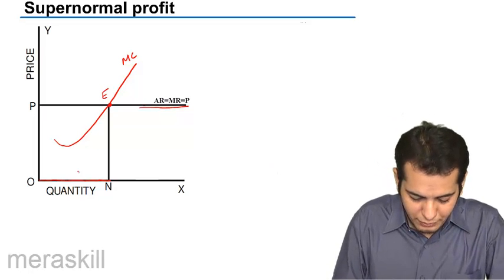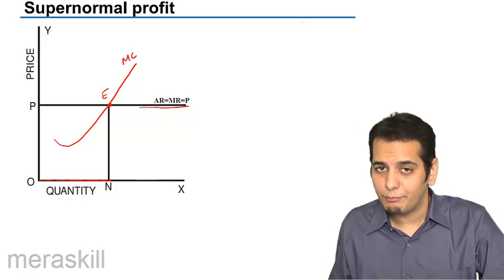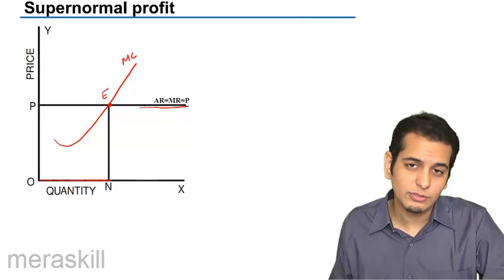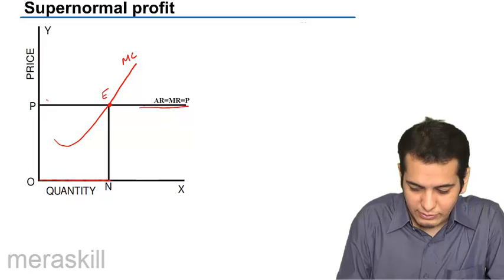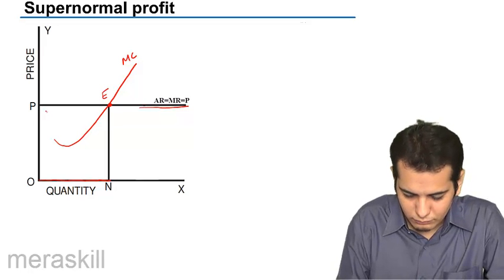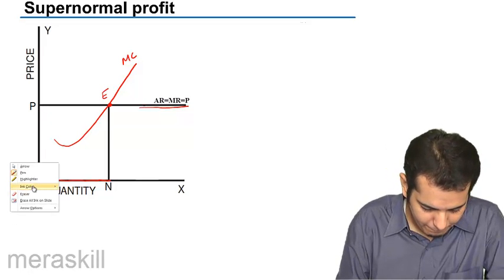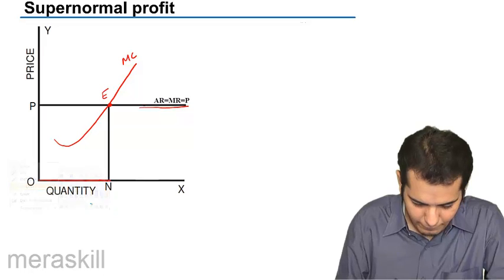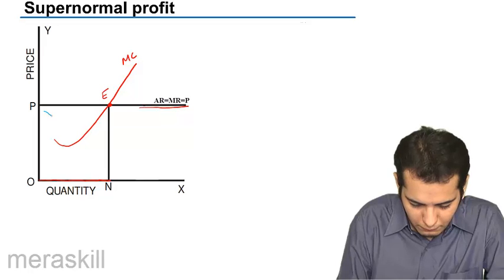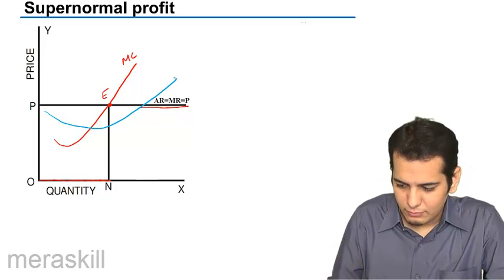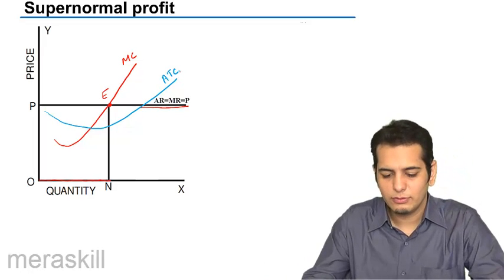So now if he is producing ON number of units, let's see if he will be incurring profits or losses or he will be breaking even. Now let's assume this is the average total cost curve for the firm.